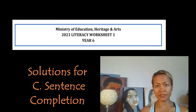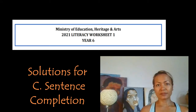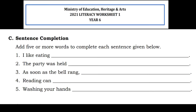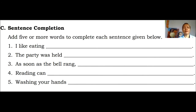This is to help you with your solutions if you're in Year 6 and you're attempting Worksheet 1 for Literacy of the Ministry of Education materials. They've given us the beginning of five different sentences and they want us to complete the sentence. For C, sentence completion, add five or more words to complete each sentence given below.